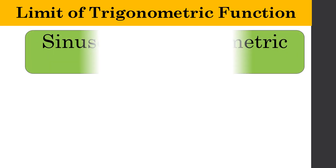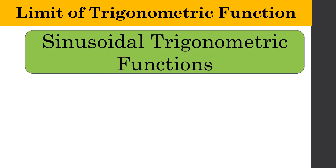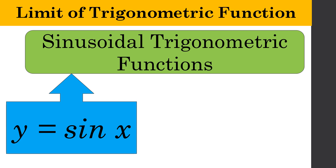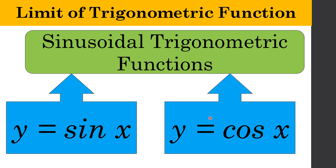We call these sinusoidal trigonometric functions. There are only two: y is equal to sine x and y is equal to cosine x. They are considered the most fundamental trigonometric functions because all the other functions can be expressed in terms of these two functions. That is why they are the most fundamental trigonometric functions.